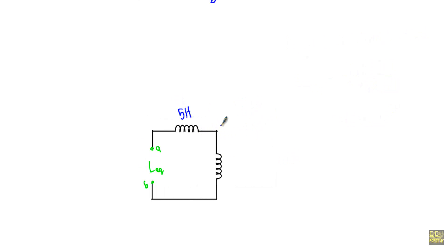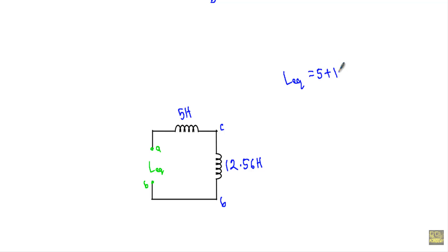Between C and B terminals, the equivalent inductance is 12.56 henry. The total L equivalent will be the sum of 5 henry and 12.56 henry, because they are connected in series. Therefore the total inductance of the circuit is 17.56 henry, and this is the answer.